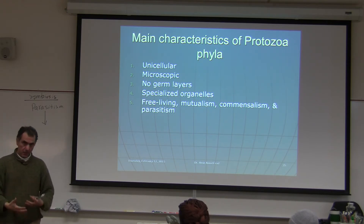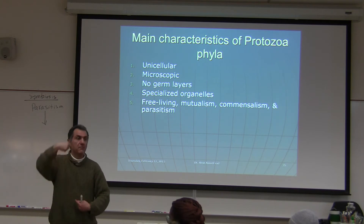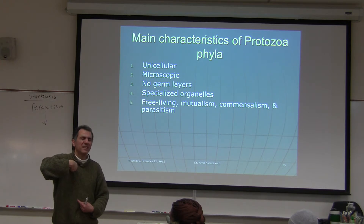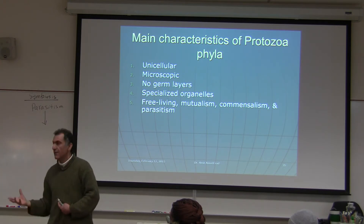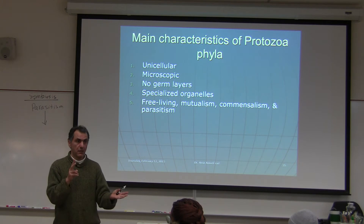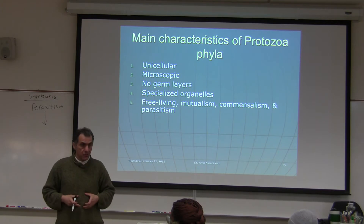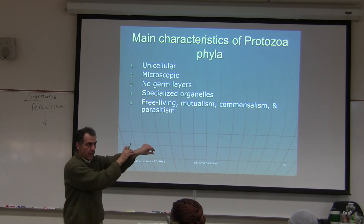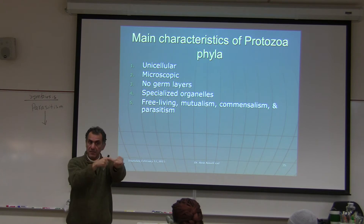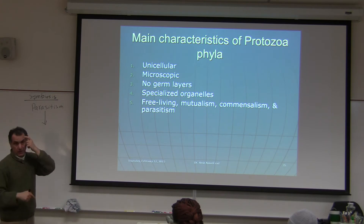An example of symbiosis is a tapeworm in your gut or a tick on your body — different species, one metabolically depending on the other. A pregnant mother and fetus is NOT a good example of symbiosis because they are the same species. Symbiosis requires two different species.